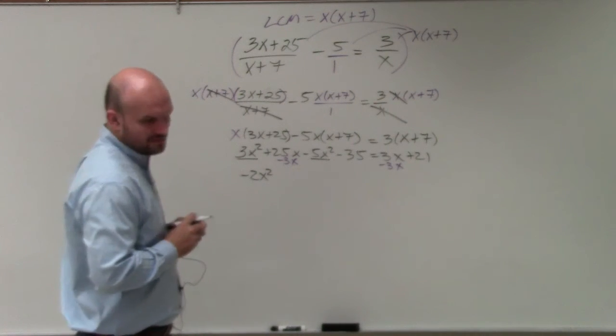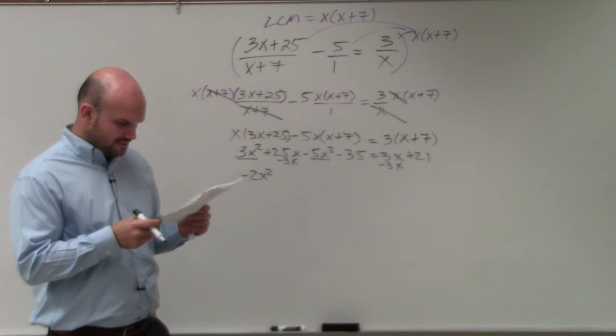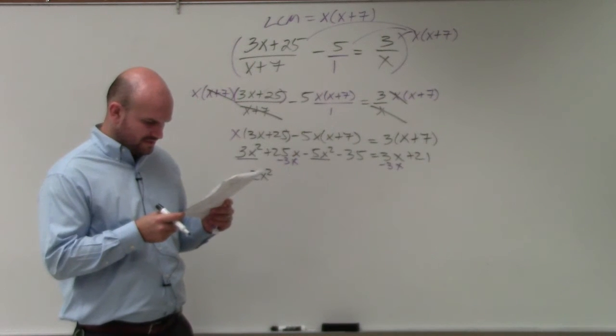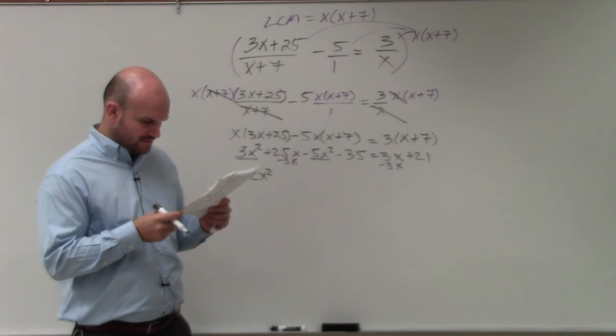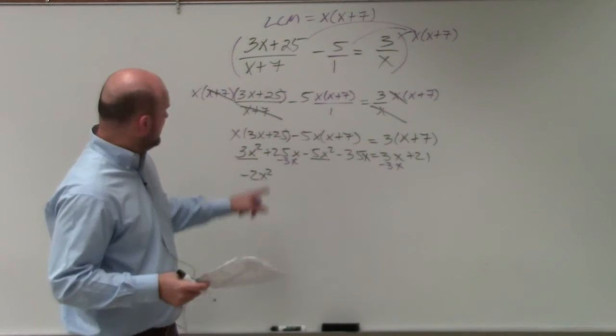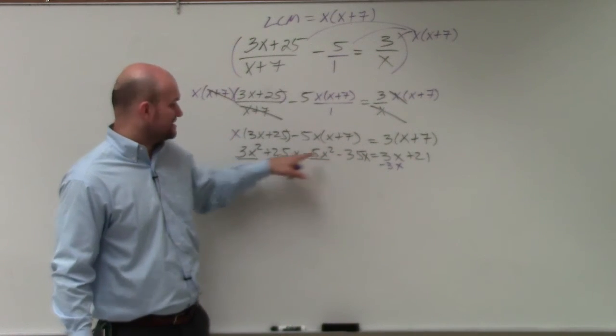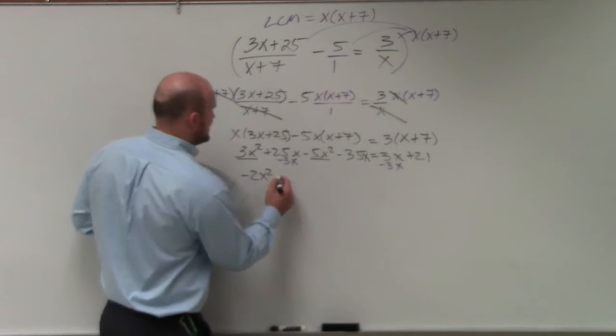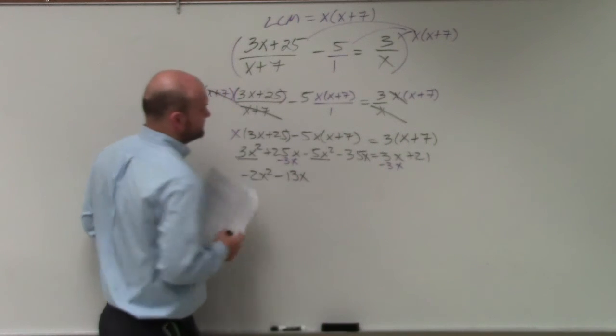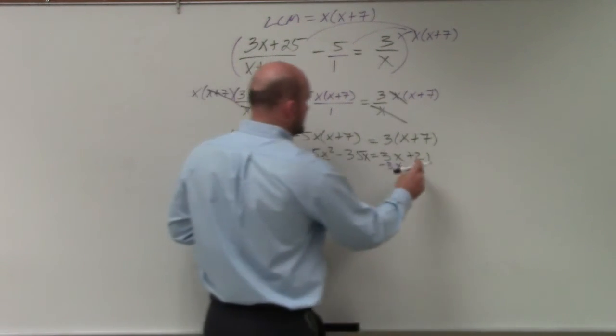So, ooh, did I do this wrong? 25 minus, oh, that's 35x, right? There you go, okay. So therefore, 25x minus 35x is negative 10x minus 3x is going to be a negative 13x. And then I need to subtract the 21 to both sides.